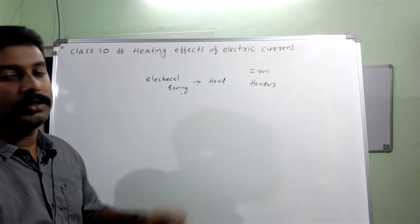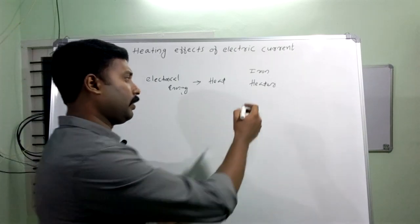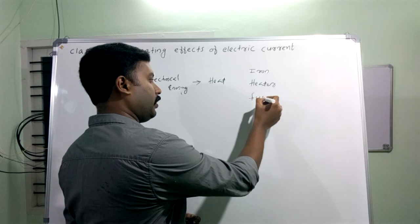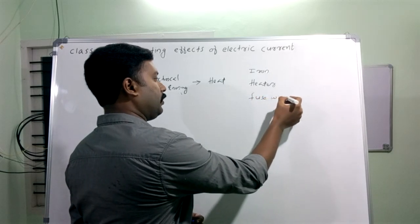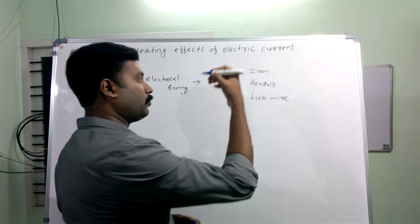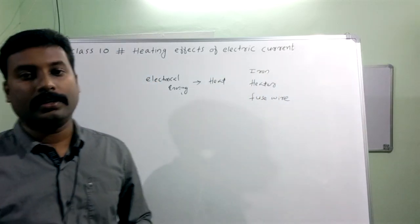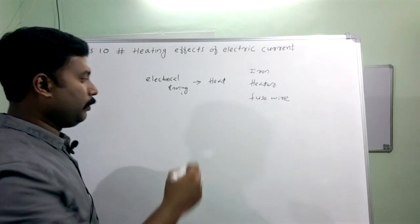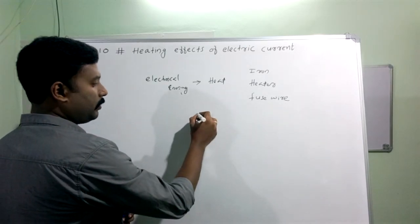We use heat energy in appliances. We use a fuse — a safety fuse — which also works on the heating effect of electric current. We use a conductor to understand this effect.